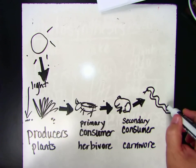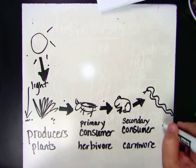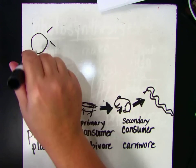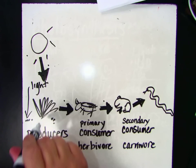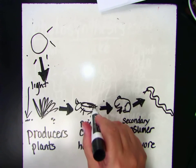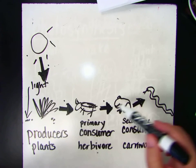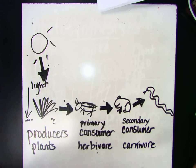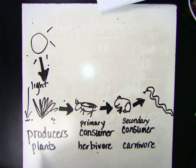And the snake is also a carnivore, and he's also a consumer. So we show energy is transferred from the sun to the plant or the producer. That energy is transferred to the primary consumer, which is a herbivore, and that energy is transferred to a secondary consumer, and he would be considered a carnivore.